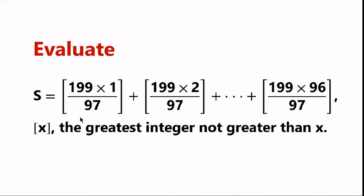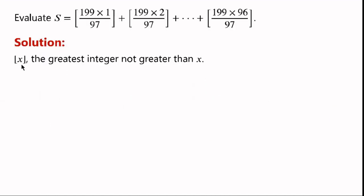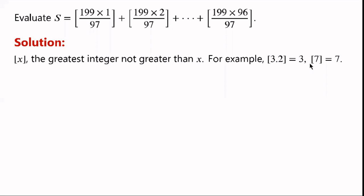Evaluate this numerical expression. This notation — square brackets — represents the greatest integer not greater than the argument (the floor function). For example, square brackets 3.2 equals 3, and square brackets 7 equals 7.